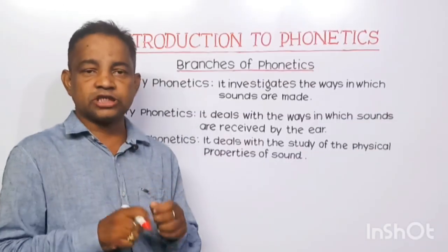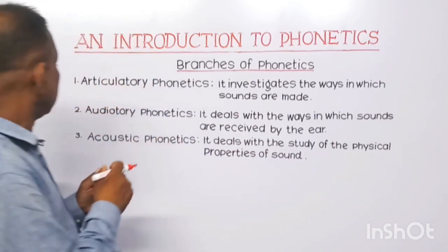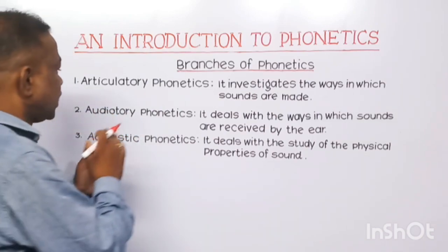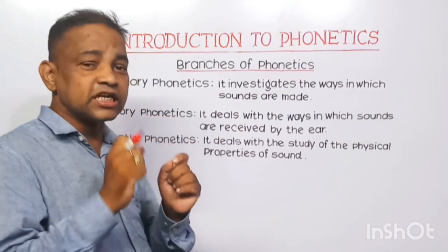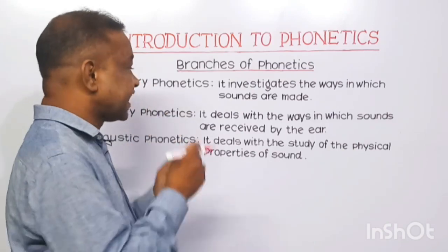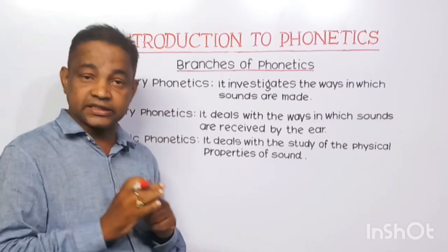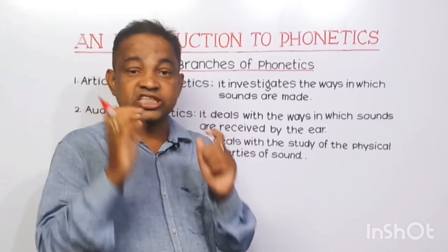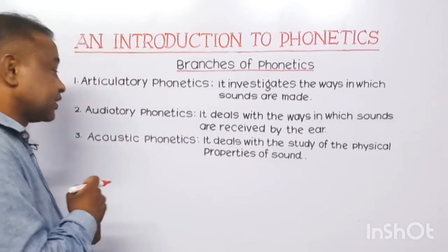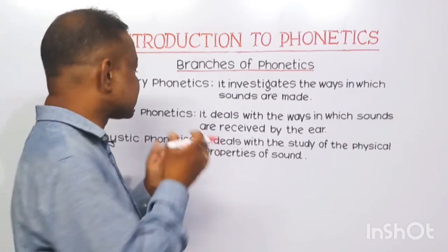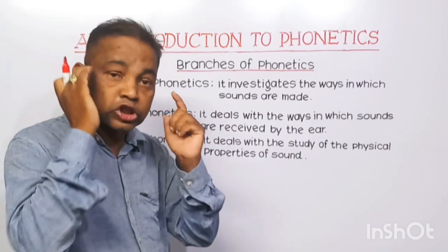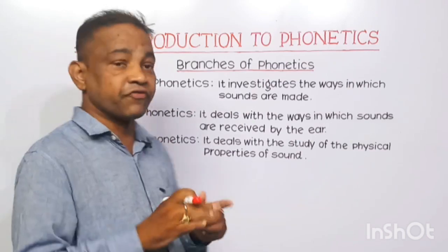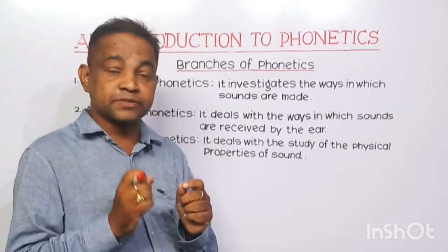Let us discuss three important branches of phonetics: articulatory phonetics, auditory phonetics, and acoustic phonetics. Articulatory phonetics is the oldest branch of phonetics; it investigates the way in which sounds are made — in other words, it deals with the production of speech sounds. Auditory phonetics deals with the ways in which sounds are received by the ear. Acoustic phonetics deals with the study of the physical properties of speech sounds.